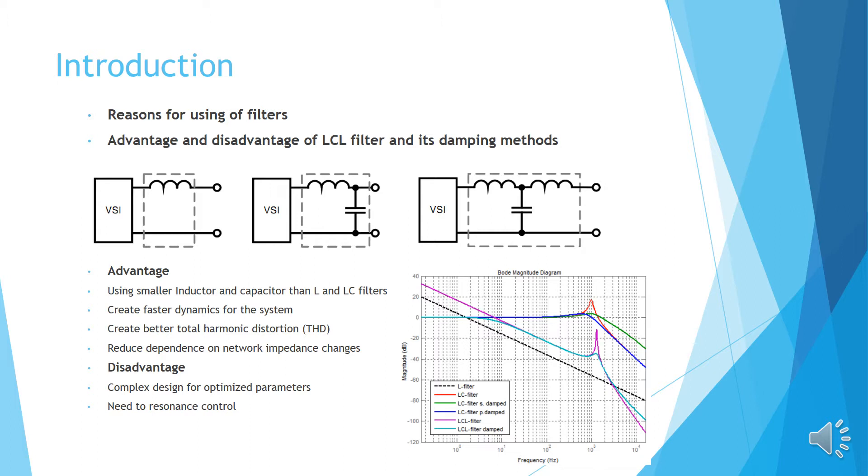Advantages of L-CL filters and other passive filters, such as using smaller inductor and capacitors, create faster dynamics for the system, create better total harmonic distortion or THD, reduce dependence on network impedance. Disadvantages of L-CL filters, such as complex design for optimized parameters, need for resonance control.